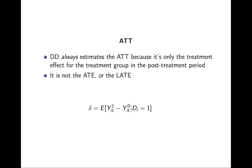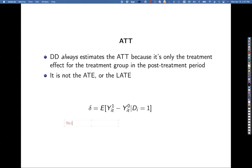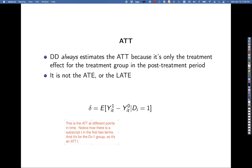Now, the Santana and Zhao paper is not a staggered rollout paper - it is a simple two-by-two paper. DD is going to always estimate the average treatment on the treated, because it's the only treatment effect for the treatment group in the post-treatment period. It is not the average treatment effect, it is not the local average treatment effect - it is the ATT for a particular point in time. Notice there is a subscript t in the first two terms, and it's for D equal 1, so D equal 1 is the treatment group - this is the average treatment effect for the treated.